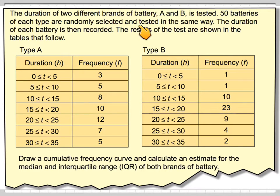The duration of two different brands of battery, A and B, is tested. Fifty batteries of each type are randomly selected and tested the same way. The duration of each battery is then recorded. The results of the test are shown in the tables that follow. Draw a cumulative frequency curve and calculate an estimate for the median and the interquartile range, sometimes written as IQR, of both brands of battery.